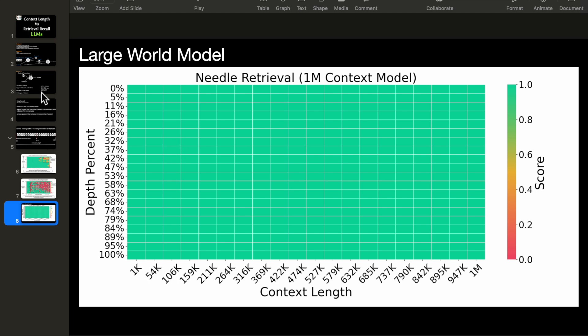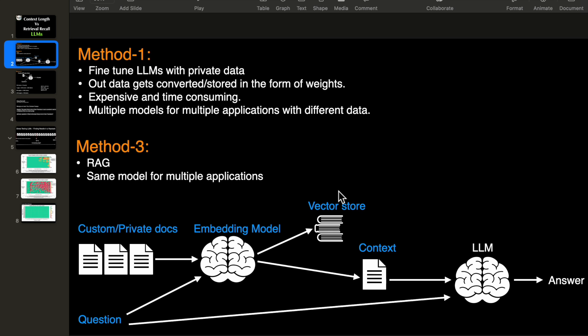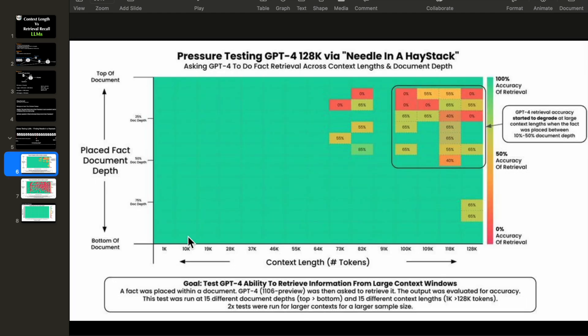But I hope it become clear to you why larger context length is not necessarily a great thing for recall and why we might all still need the RAG systems. So in the next video, we will go through the code. Again, it's developed by Greg. And we will generate these results.